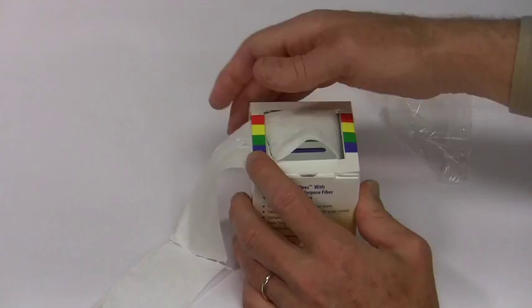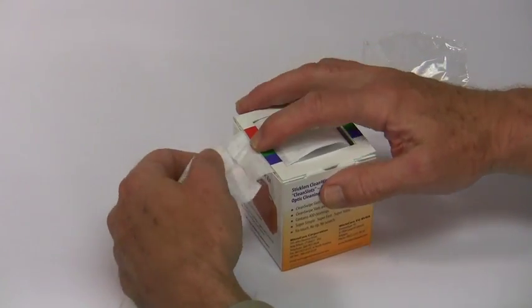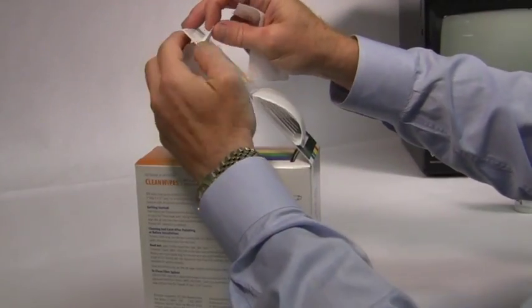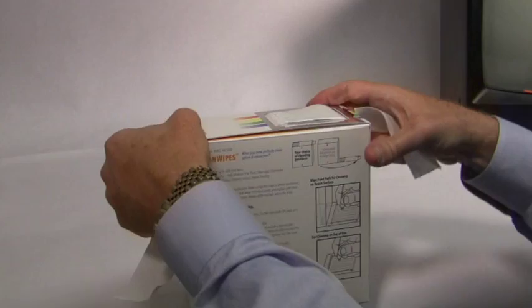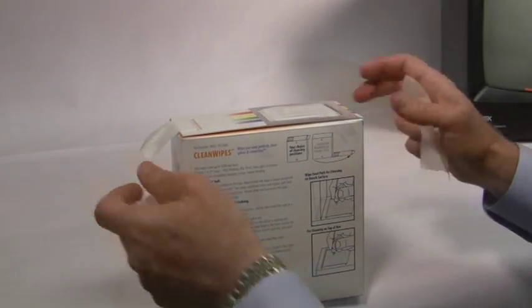Setup for the CleanWipes 3200 is similar to the CleanWipes 400, except as shown in this illustration, you have one extra opening in the top lid through which to feed the first wipe.